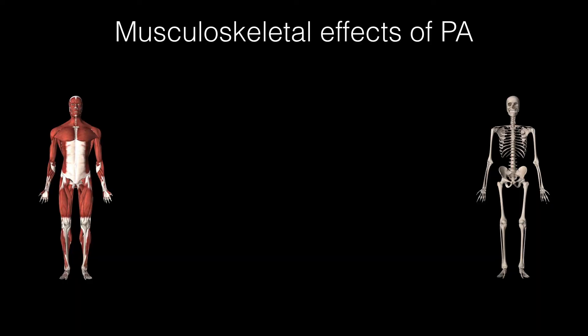Now let's look at more specific effects — what actually happens physiologically? The type of activity matters somewhat, but what can we generally expect from physical activity, especially at moderate to high intensities? We see muscle fiber type changes. We have muscle fibers more suited to aerobic activity and others more suited to anaerobic activity — sprinting and strength-type activities. If we do more aerobic activity and provide more cardiorespiratory challenges, we'll develop those aerobic fibers more. If we do more strength, power, and strength endurance training, we'll favor the anaerobic fibers more.